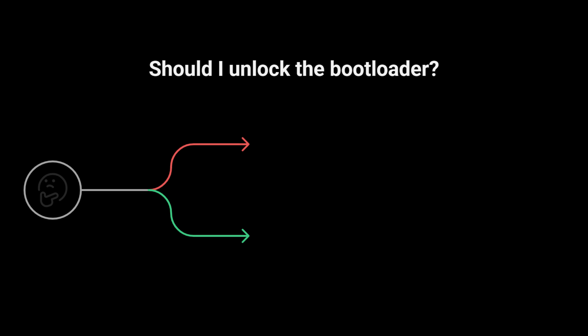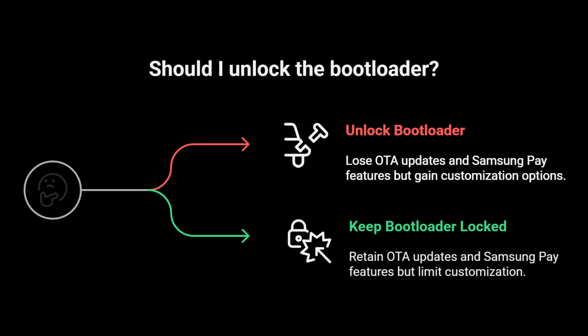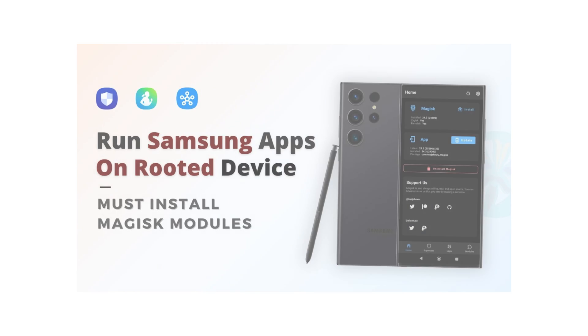Also, once the bootloader is unlocked, your device will no longer receive OTA updates — you'll need to manually install software updates going forward. But if you still want to use apps like Samsung Pay or Secure Folder after unlocking, check out the video linked in the description for a possible workaround.